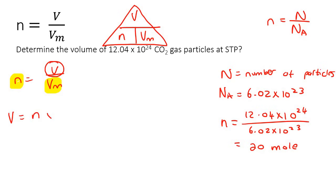By saying V is equal to n multiplied by Vm, and so V is going to be equal to 20 moles multiplied by molar volume, which is 22.4. And if you calculate this, you end up with 448 decimeters cubed.